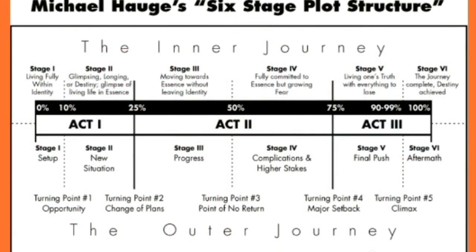Some script writers have gone even further than Sid Field and produced complex structure arrangements. However, for our purposes, the basic Sid Field idea of a three-act structure works very well — it gives us all the elements we could possibly need to create our movie. One more movie script structure to look at is the one produced by Michael Hogue. It's a six-stage structure, but very similar to the three-act structure proposed by Aristotle and Sid Field. We still have the three acts, the 50% midpoint, but it's broken down into further smaller percentages, so it's a little more precise than Sid Field's paradigm.